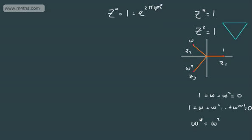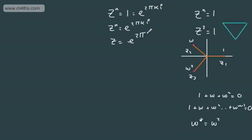We can write 1 as e to the 2πki, where k is any integer — so any multiple of 2π. Since z to the n has a modulus of 1, we write z to the n equals e to the 2πki. Using rules of indices, z equals e to the 2πki over n. All we're doing is splitting a unit circle and dividing by n, where n is the number of roots we're looking for.